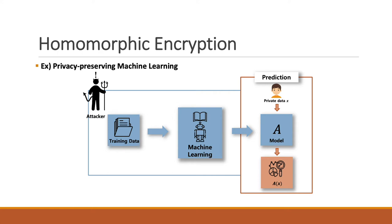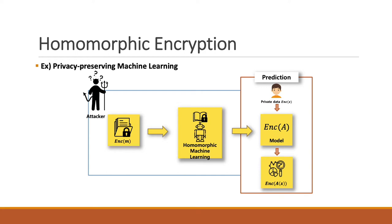Without any privacy-preserving method, an attacker can invade any procedure of the machine learning and take the data, which can be very sensitive and private, such as genome, health, or finance data. However, when we encrypt the training data with homomorphic encryption, since we can do any computation in the encrypted state, we can still learn the model and go on to the prediction phase, but the attacker would not be able to learn any partial information of the data because the data is encrypted.